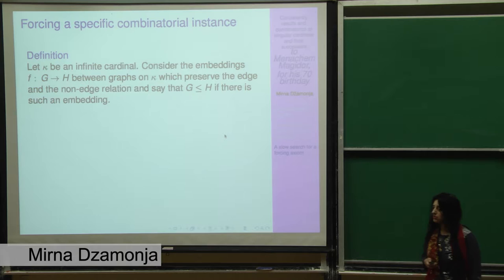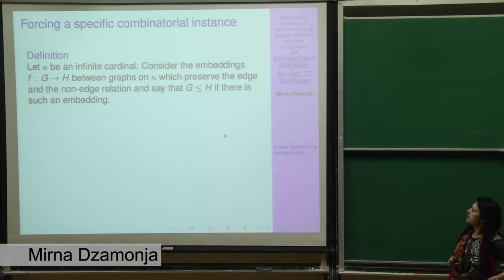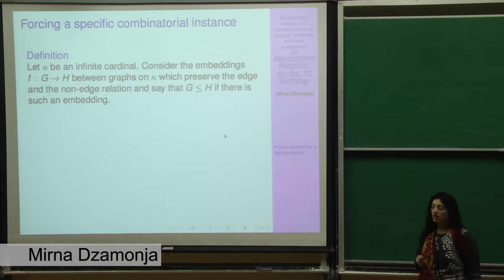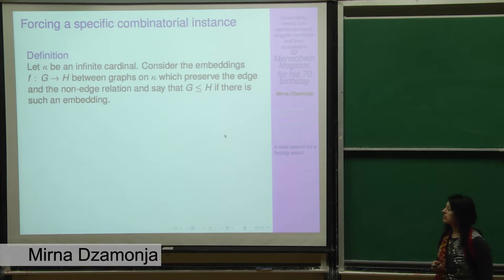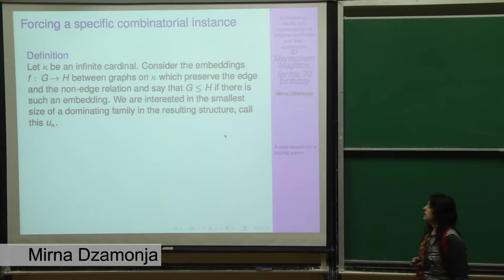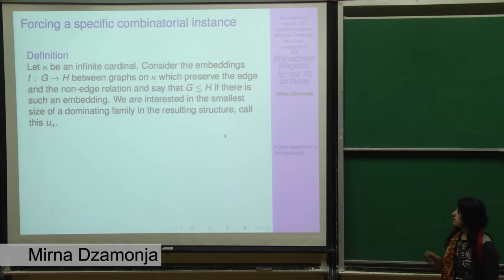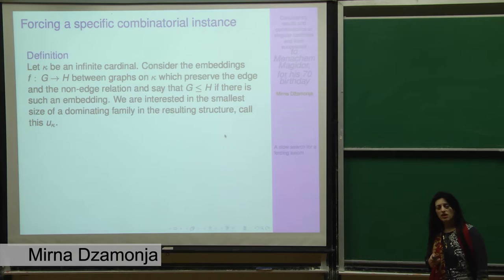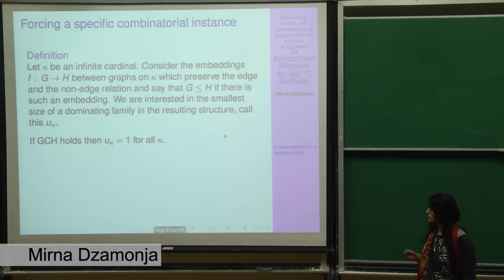Let me show you a specific instance that we have been studying in several papers with the idea of this being sort of the first non-trivial combinatorial thing that you might think after you already know how to move the cardinal arithmetic. So this studies the embeddings of graphs. Just to remind you what this means, if we have an infinite cardinal, we can consider the embeddings between graphs which preserve the edge and the non-edge relation. This gives us an order between the graphs and we can look at the dominating number of that order, if you want to talk of now T number. And I'll call this u_kappa for this talk.